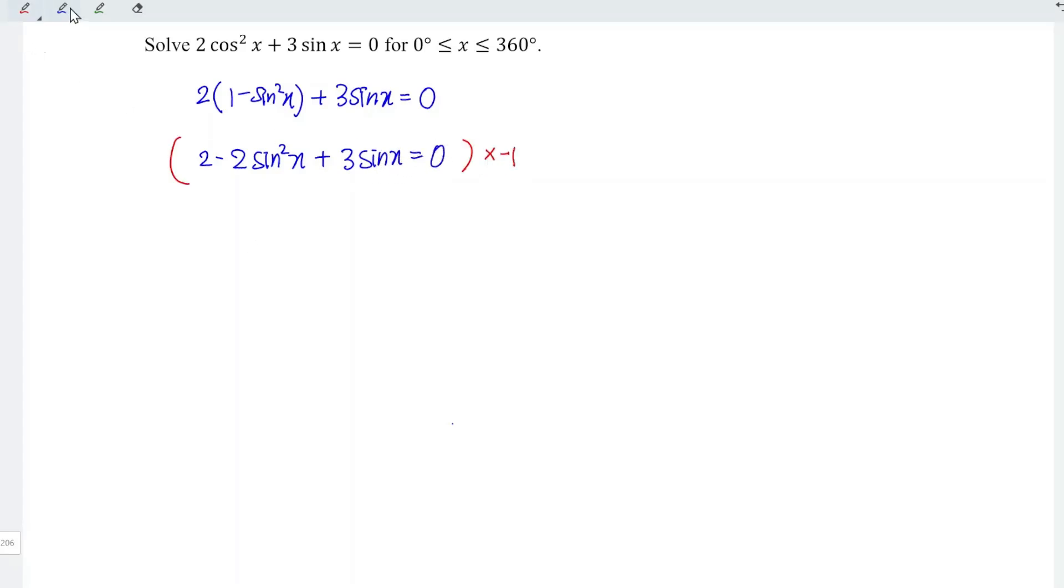Multiply negative 1 and rearrange the equation. We should obtain 2 sine squared x minus 3 sine x minus 2 is equal to 0.